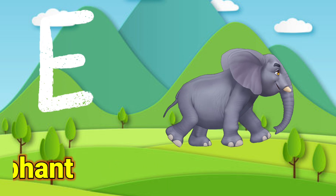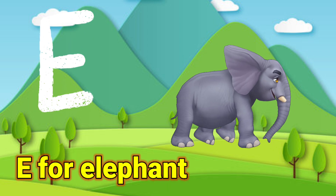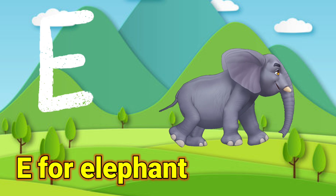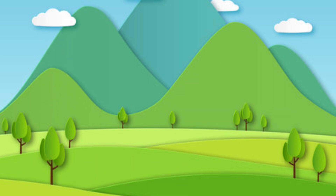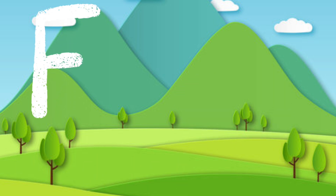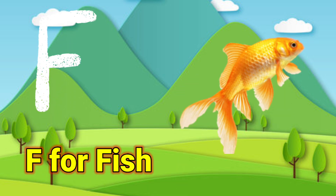E for Elephant. Elephant means haati. F for Fish. Fish means machli.